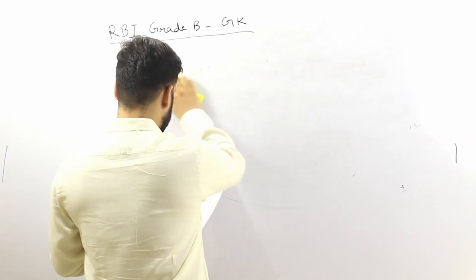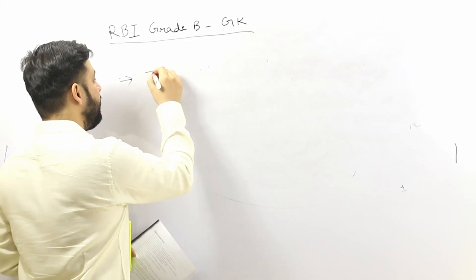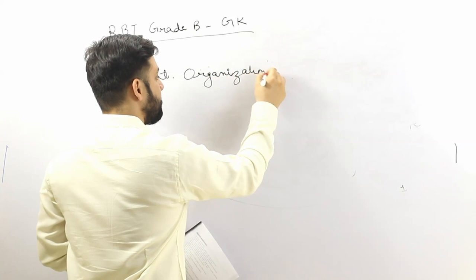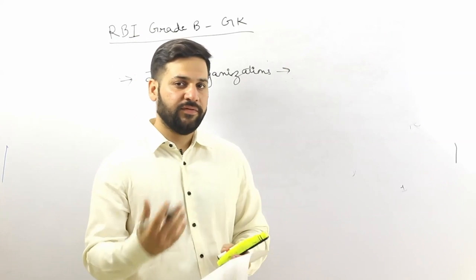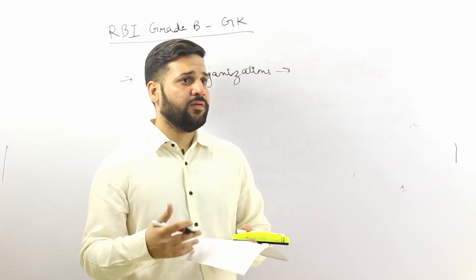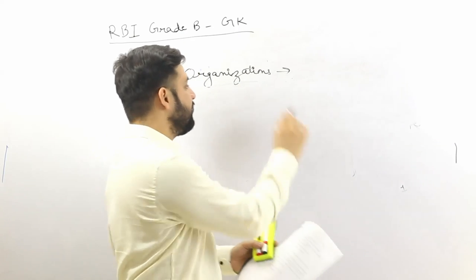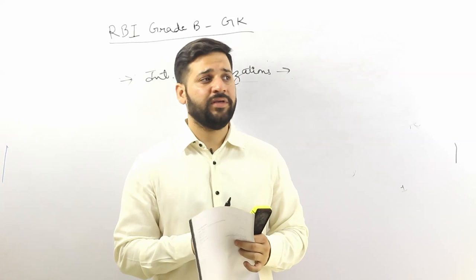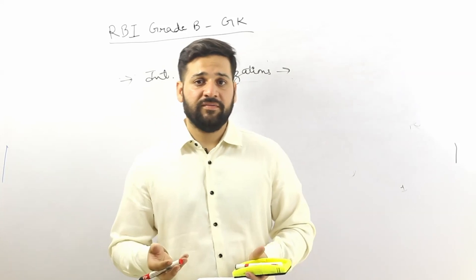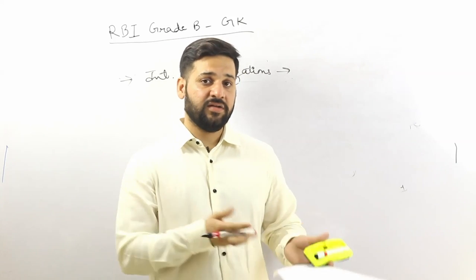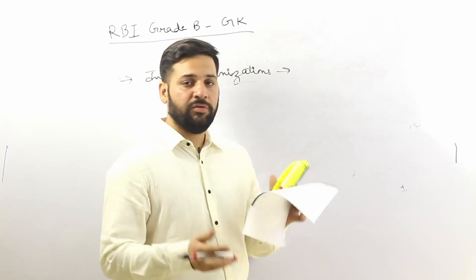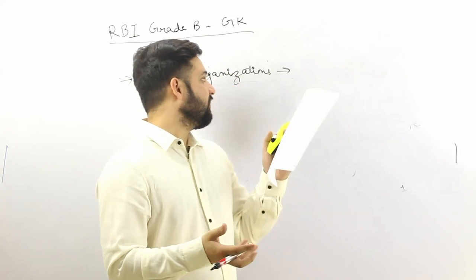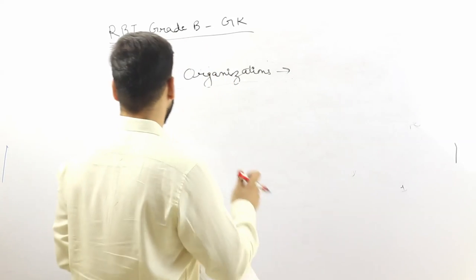Then, very important, are international organizations — their headquarters, who heads them, their vision, and most importantly their summits. Organizations like WTO, IMF, and the EU hold summits every year; you need to read about the location and date of those summits. You also need to read about recent programs and initiatives conducted by these organizations.